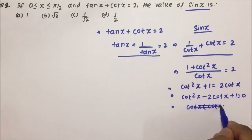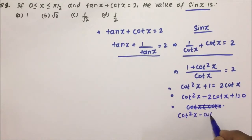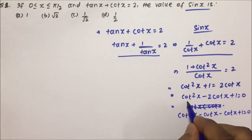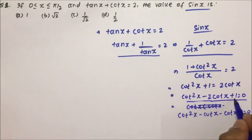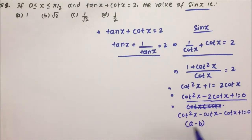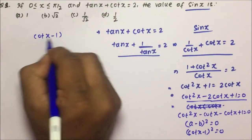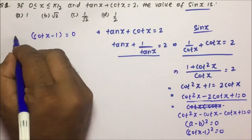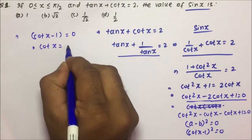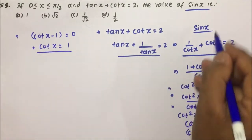This is a quadratic equation. We can factorize it: (cot x − 1)² = 0, because a² − 2ab + b² = (a − b)². So cot x minus 1 equals 0, which means cot x equals 1.